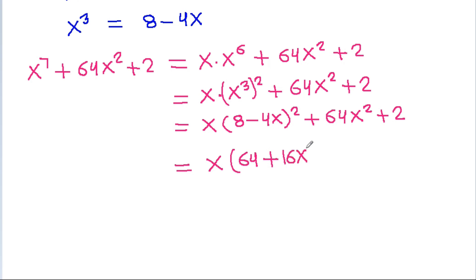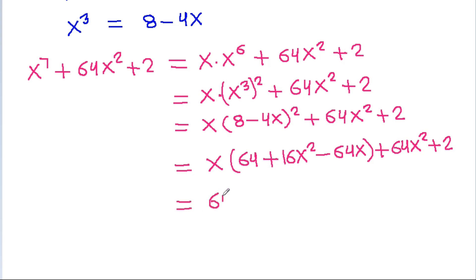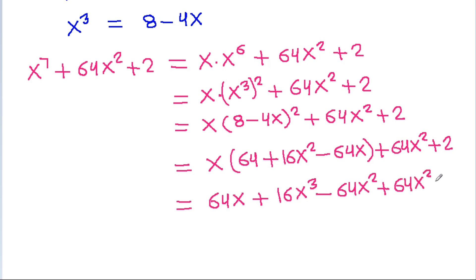Expanding (8 minus 4x) squared: 8 squared is 64, and 4x squared is 16x squared, minus 64x squared minus 2. Then 64x squared terms will get cancelled.